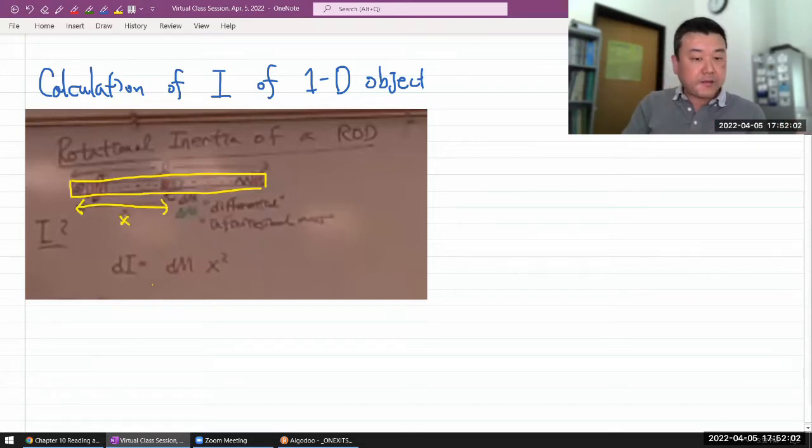I start by writing down, the infinitesimal contribution to rotational inertia by an infinitesimal mass dm that's at some distance X is given by the mass times the distance squared. That's the rotational inertia of a point mass whose derivation I did before this.